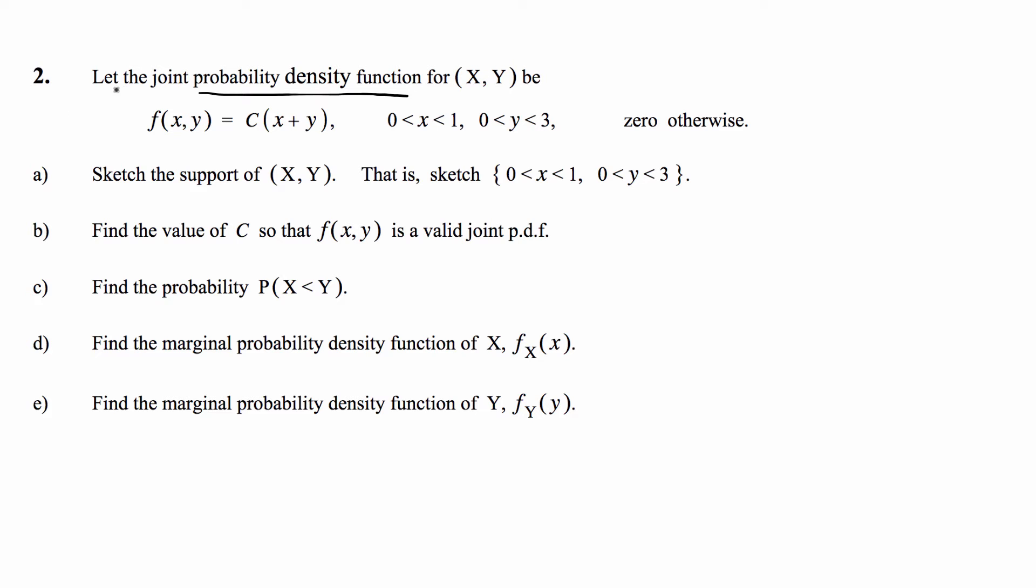The difference is that this is a continuous distribution or these are continuous variables, and in the previous case when you have PMFs you're dealing with discrete variables. We're going to do similar things, find a probability in C and then find the marginals in D and E.